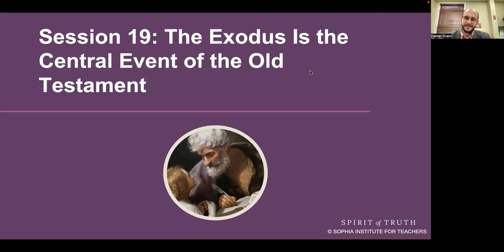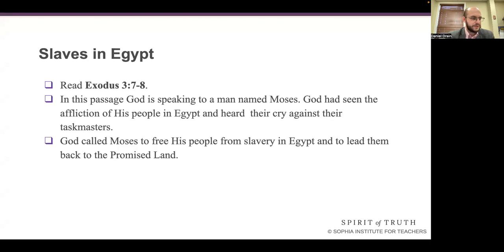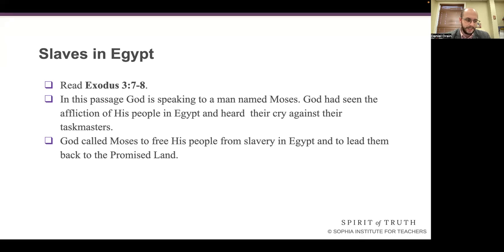The Exodus is the central event of the Old Testament. And to understand the Exodus, we need to first understand slavery. When a person is controlled by someone or something else, sometimes referred to as a master, and they're therefore not free to do what he or she wants to do, that typically is what we would call slavery. Slavery violates the moral law. The key points about American slavery are that African people were captured, chained, and brought to America on ships. They were sold to masters, primarily in the South.